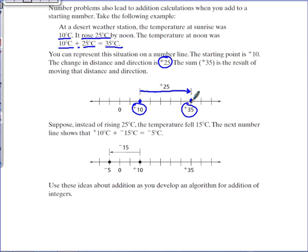Now suppose instead of rising 25 degrees, the temperature fell 15 degrees Celsius. Would this be a positive or negative integer? Yes, it would be a negative 15 to represent the fall of 15 degrees. The next number line shows that positive 10 degrees Celsius as your starting point, combined with a distance and direction of negative 15, would give you an end result or a sum of negative 5 degrees Celsius.